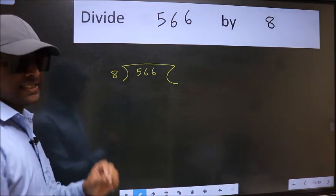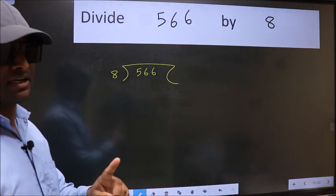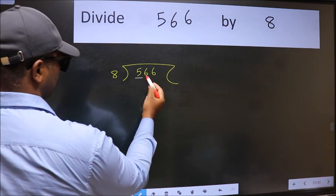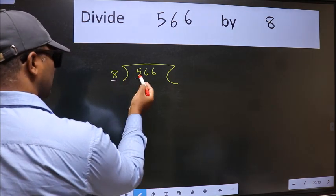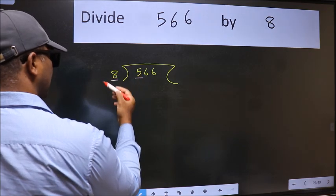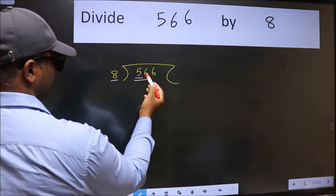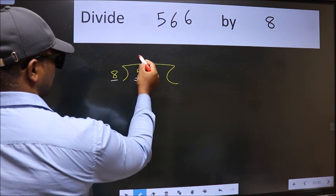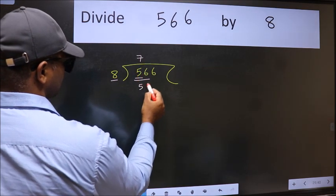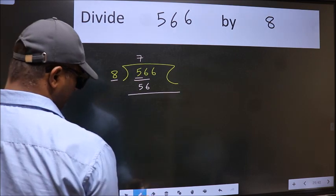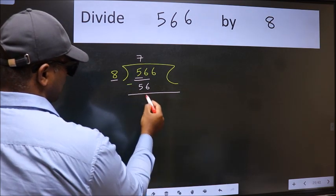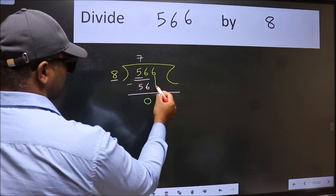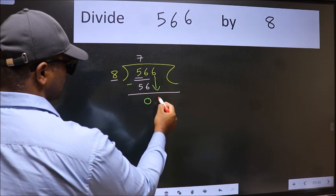This is your step 1. Here we have 5 and here 8. 5 is smaller than 8, so take two numbers: 56. When do we get 56 in the 8 table? 8 sevens are 56. Now we subtract — we get 0. After this, bring down the beside number, so 6 comes down.